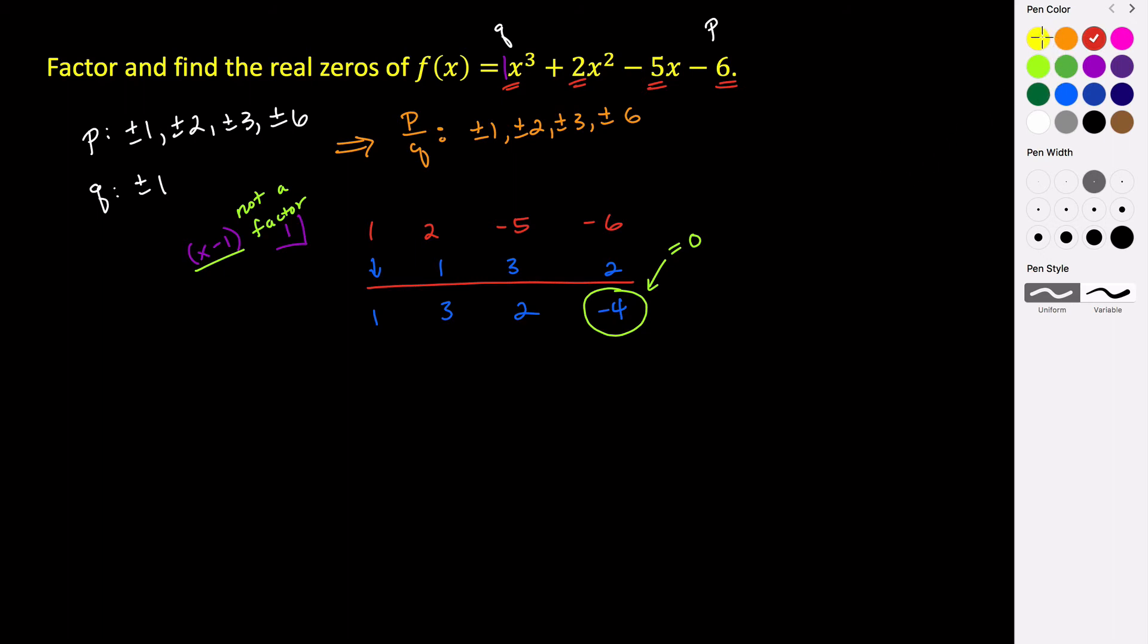In order for it to be a factor this remainder would have to be equal to zero. Now we don't just give up here. We just start working through the rest of our potential rational zeros. So we know that positive one doesn't work. I'm just going to keep working through this and try negative one. So we use the same coefficients because we're still working with the same polynomial. One, two, negative five, and negative six. And now I'm going to use negative one, which would mean x plus one would potentially be a factor. So bring the one down. One times negative one is negative one. Two plus negative one is one. One times negative one is negative one. Negative five plus negative one is negative six. Negative six times negative one is positive six. Hey, look what we got. We got a zero. So our remainder here is zero. So that tells us that x plus one is a factor.